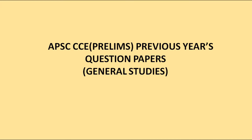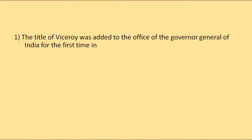Hello and welcome everyone. Today we are going to discuss the questions of Indian Polity for the year 1996. The first question is: the title of Viceroy was added to the office of the Governor General of India for the first time in — 1848 AD, 1856 AD, 1858 AD, or 1862 AD?